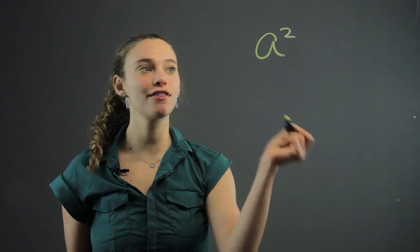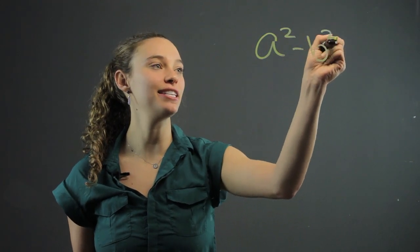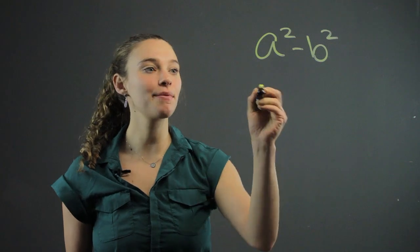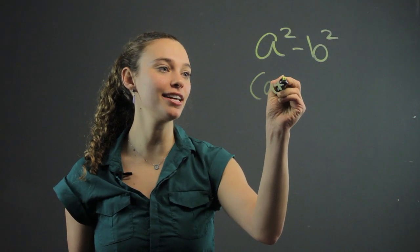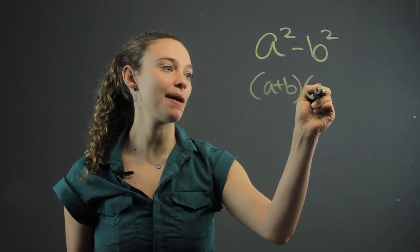When we're factoring a binomial, we like to see if it's in the form a squared minus b squared. If it is, it will always equal a plus b times a minus b.